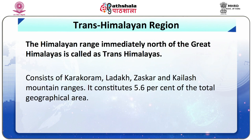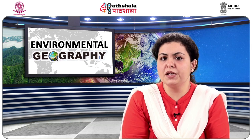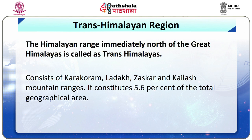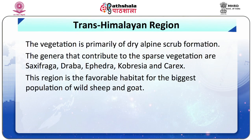Major bioregions of India. First, the Trans-Himalayan Region. The Himalayan range immediately north of the Great Himalayas is called the Trans-Himalayas, represented by the Cold Desert of Ladakh, Jammu and Kashmir, North Sikkim, and Lahaul and Spiti areas of Himachal Pradesh. This region consists of the Karakoram, Ladakh, Zaskar and Kailash mountain ranges. It constitutes 5.6% of the total geographical area, estimated to cover 1,86,200 square kilometres. The vegetation is primarily dry alpine scrub formation, with genres like Saxifraga, Draba, Cobritia and Carex. This region is the favourable habitat for the biggest population of wild sheep and goat; other rare fauna include the snow leopard and migratory black-necked crane. This region represents an extremely fragile ecosystem.